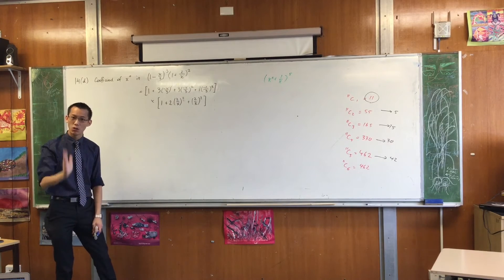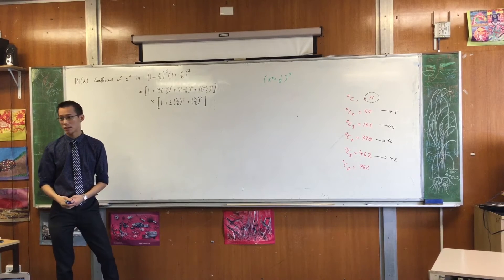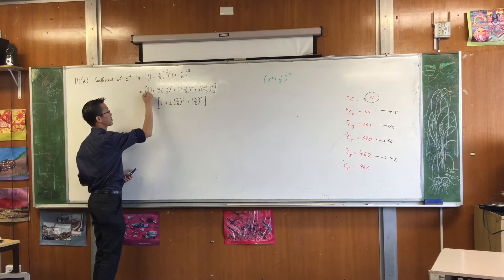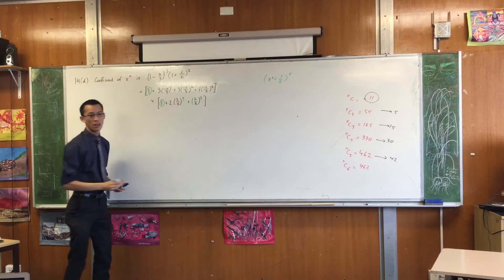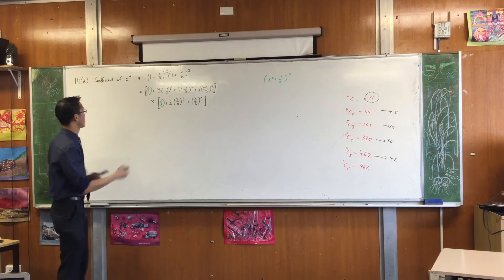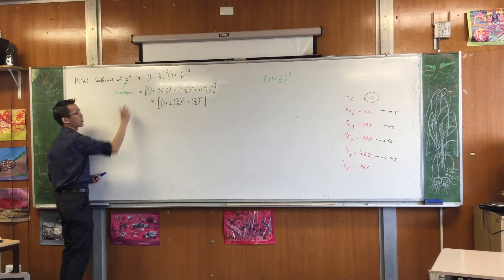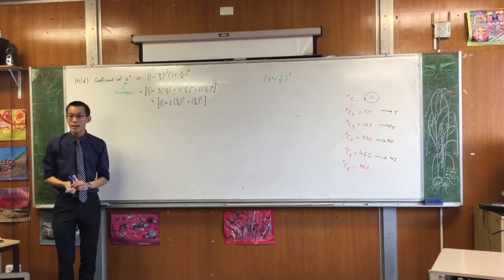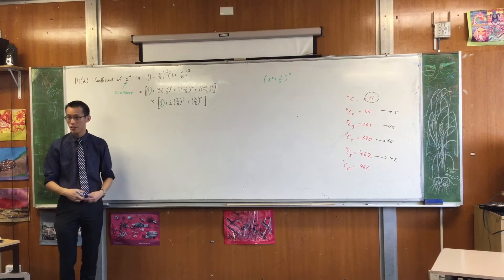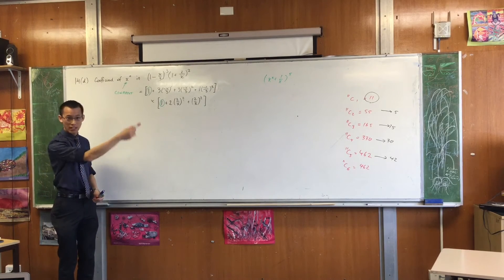So I can actually ignore a whole bunch of terms and look straight to the ones that I need. For instance, I dodged this with this. The reason why is because that is a term that I want. Do you see? It's a constant term. That's what x to the 0 is. It's a constant. So 1 times 1 is going to form a part of the x to the 0 term when I'm finished here. So I'm just going to highlight them in one colour. Then I'm going to go on to the next term.